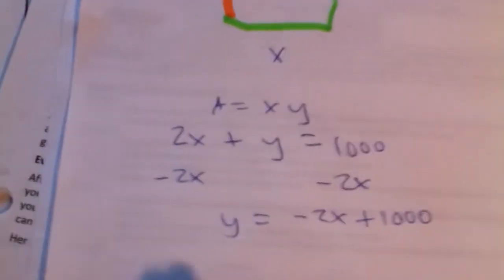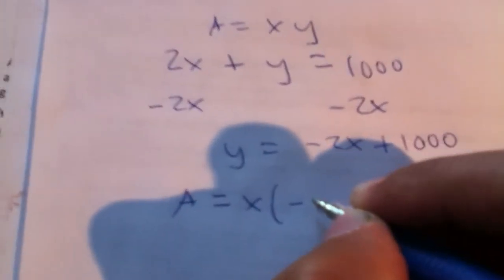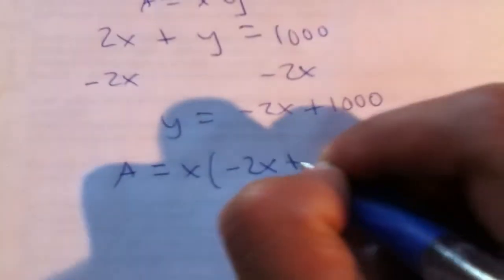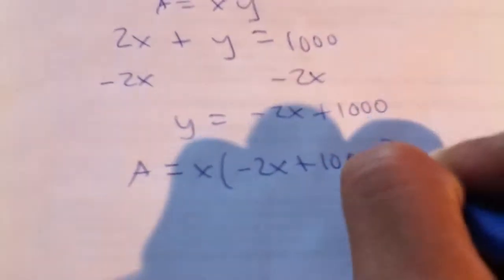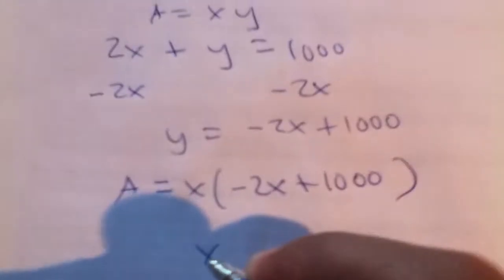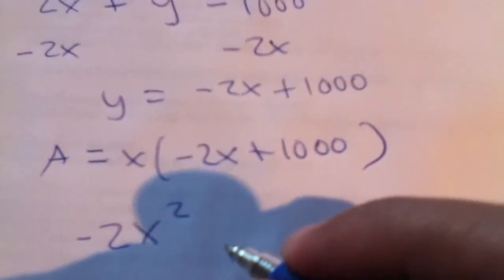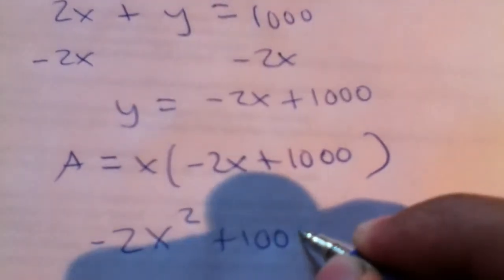And now, we're going to substitute that back into the area equation. So, we get area equals x times whatever y was, which is negative 2x plus one thousand. And when we distribute that x, we get negative 2x squared plus a thousand x.